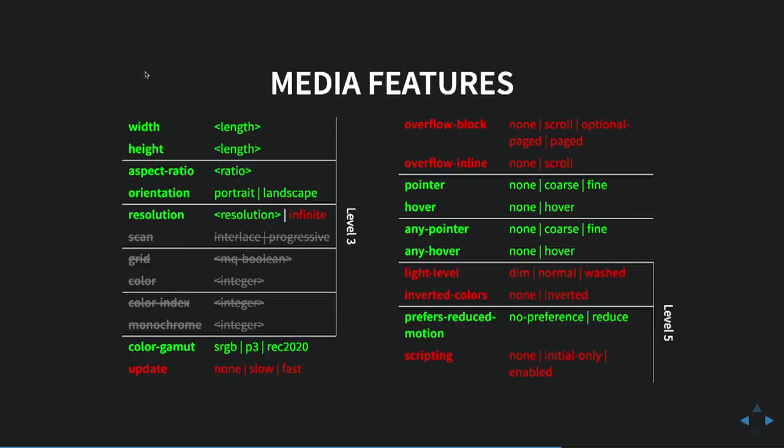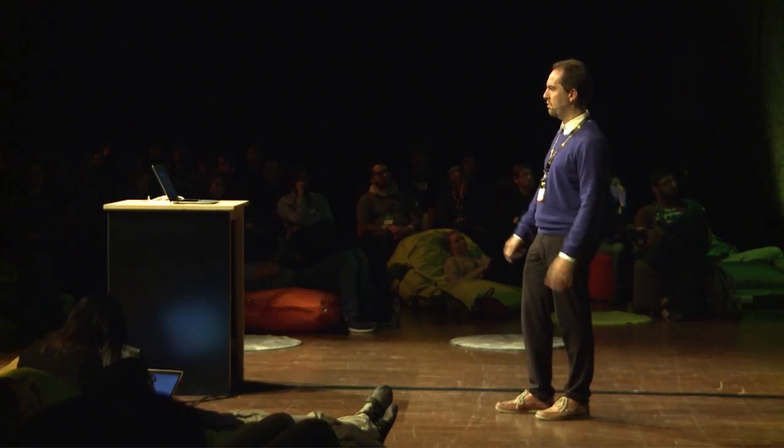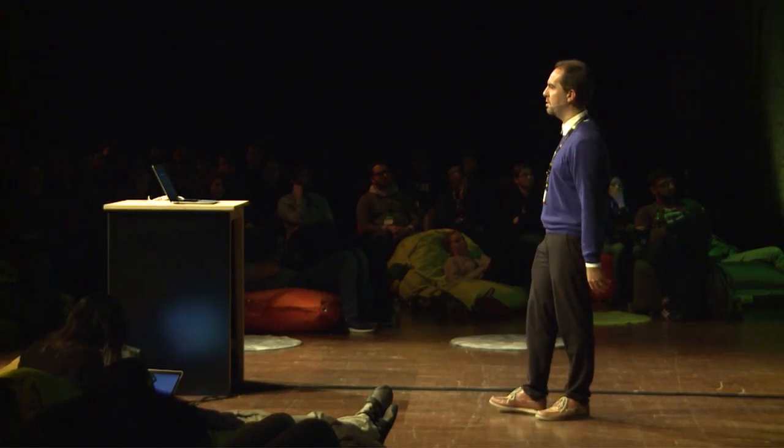We got a few more features in Level 5, only one of which is currently supported. It lets you know, on macOS — there are a number of people who get heavily distracted, or even sick, when things move around. So there's a preference in the operating system to ask things to not animate so much. If people tick that box, you can know about it through this media query and reduce the amount of animations you use.